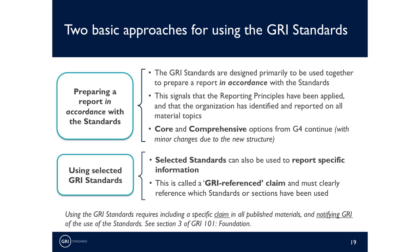However, the standards also allow greater flexibility for those who want to use selected standards or even parts of their content to report specific information. For example, an organization might want to report only on the topic of child labor, and it could use GRI 408 Child Labor together with the sections of GRI 103 Management Approach to disclose its impacts in this area and how they are managed. Any use of selected standards like this requires a specific GRI reference claim statement to be included in published materials, ensuring transparency in how the standards have been applied. It has also been clarified that any use of the GRI standards in published materials requires notifying GRI, which is free of charge and can be done via our website.